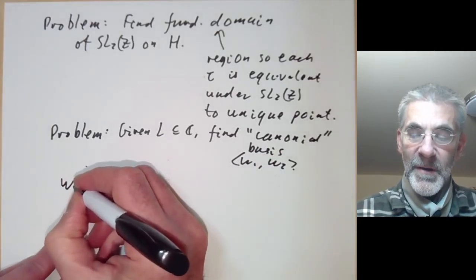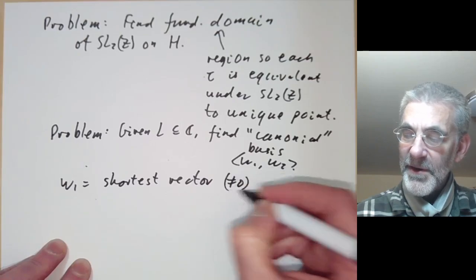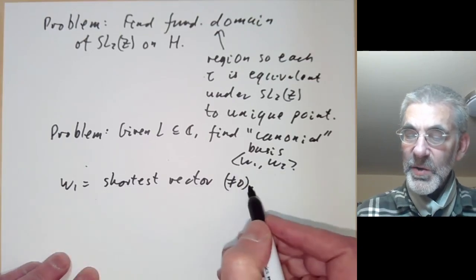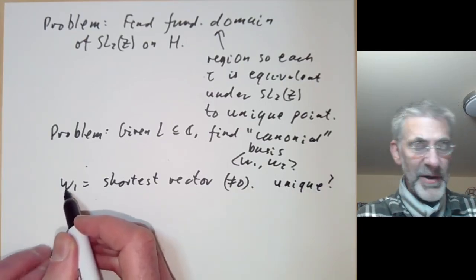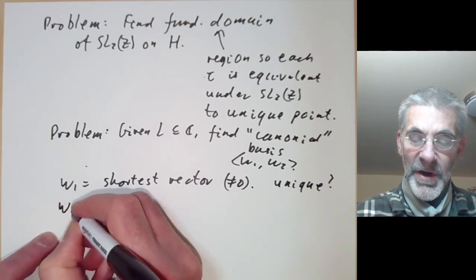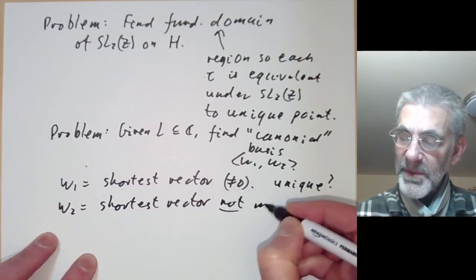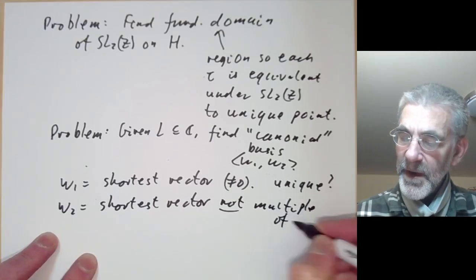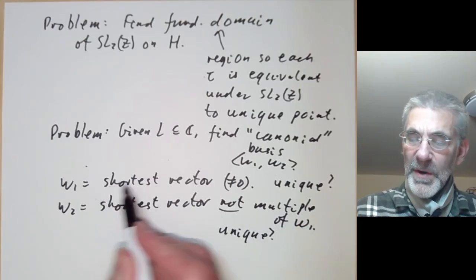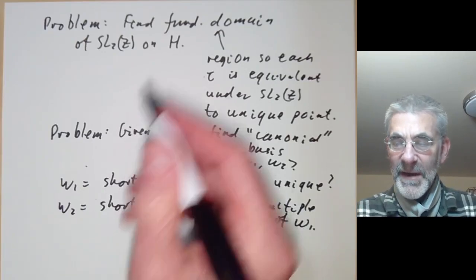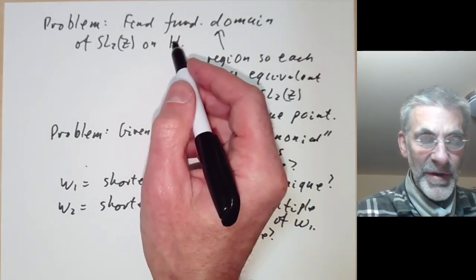And we can do this as follows. We can just pick omega-1 to be the shortest vector, obviously other than zero. And this is usually unique up to sign but sometimes not. So let's put unique with a question mark. And we can put omega-2 to be the shortest vector not in omega-1. And again we can ask is this unique. And if omega-1 is unique up to sign and omega-2 is unique, then we've found a canonical basis for the lattice.